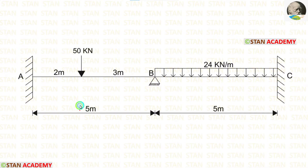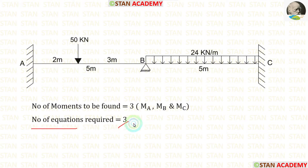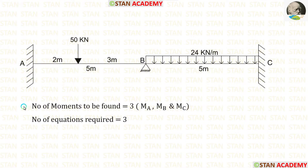Span AB is five meters long and span BC is also five meters long. In this beam we have to find three moments: MA, MB, and MC. So we need three equations. One equation can be formed using two spans, but we are having only two spans, so using these two spans we can create only one equation. Therefore, we have to create two imaginary spans — one on the left of A and one on the right of C.